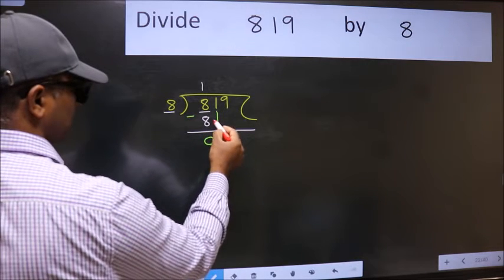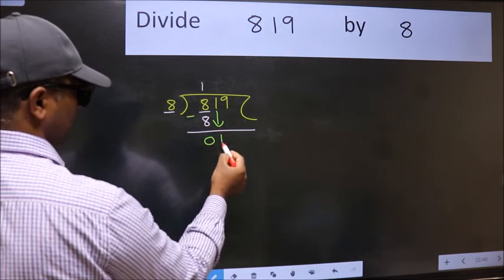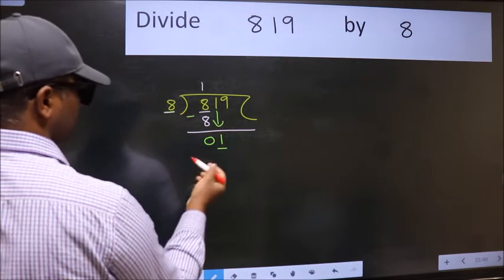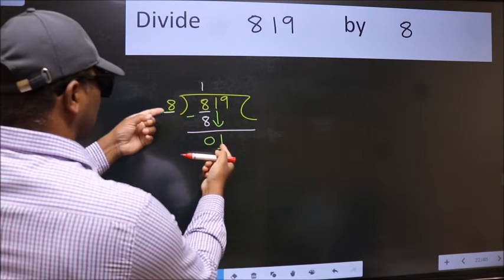After this, bring down the beside number. So 1 down. Now here we have 1 and here 8. 1 is smaller than 8.